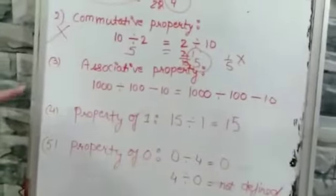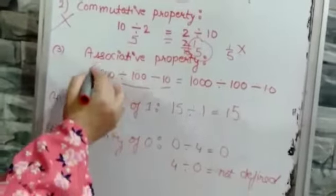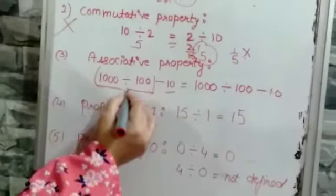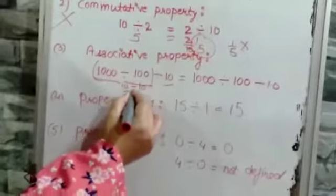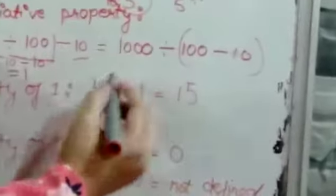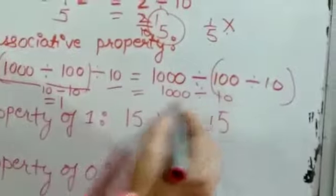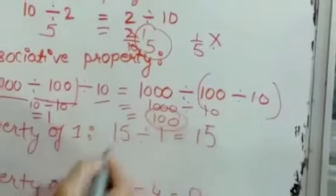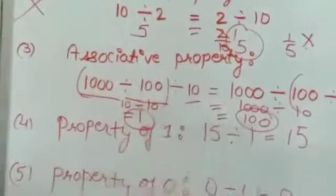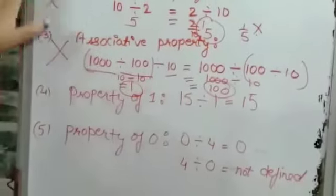Next property, associative property, says that if there are 3 numbers to divide, definitely we are going to divide 2 at a time. So 1000 divided by 100 is going to give you 10, 10 divided by 10 will give you 1. Now instead of 1000 divided by 100, here I'm going to take 100 divided by 10. 1000 divided by 10, here on the right hand side the answer has come 100, while on the left hand side the answer is 1. So if we are changing the order, there is a difference. That means the associative property does not exist under division.